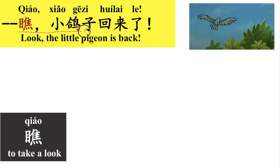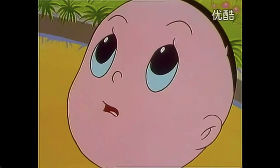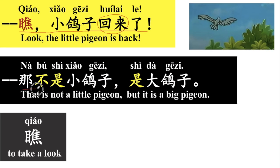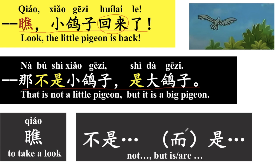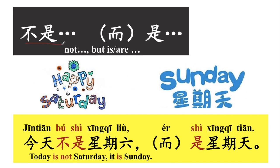瞧，小鸽子回来了。小鸽子回来了。好，回来就是come back. 好，瞧，小鸽子回来了。那不是小鸽子，是大鸽子。好，不是，是。或，我们也可以说，不是，而是。不是，是。